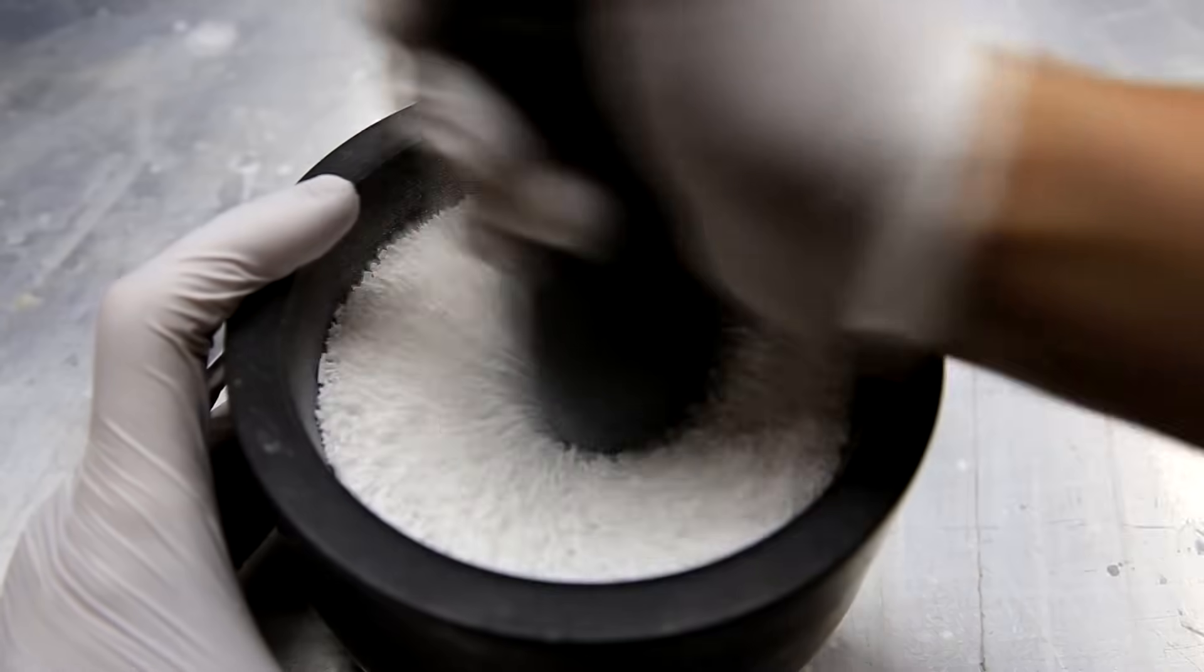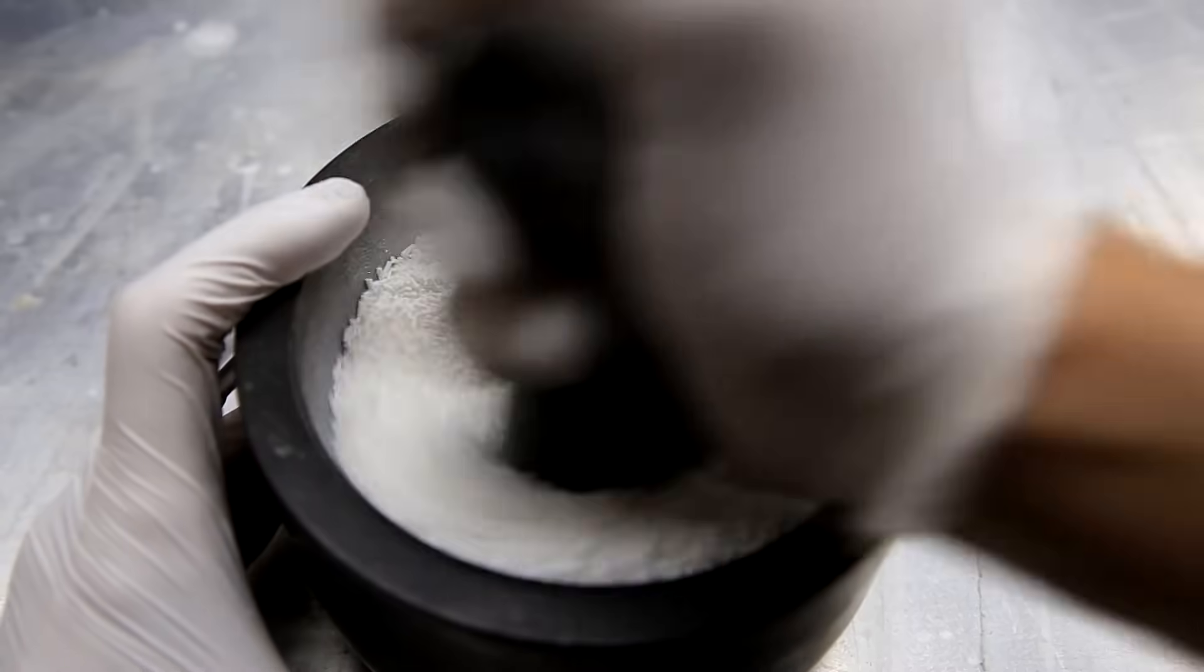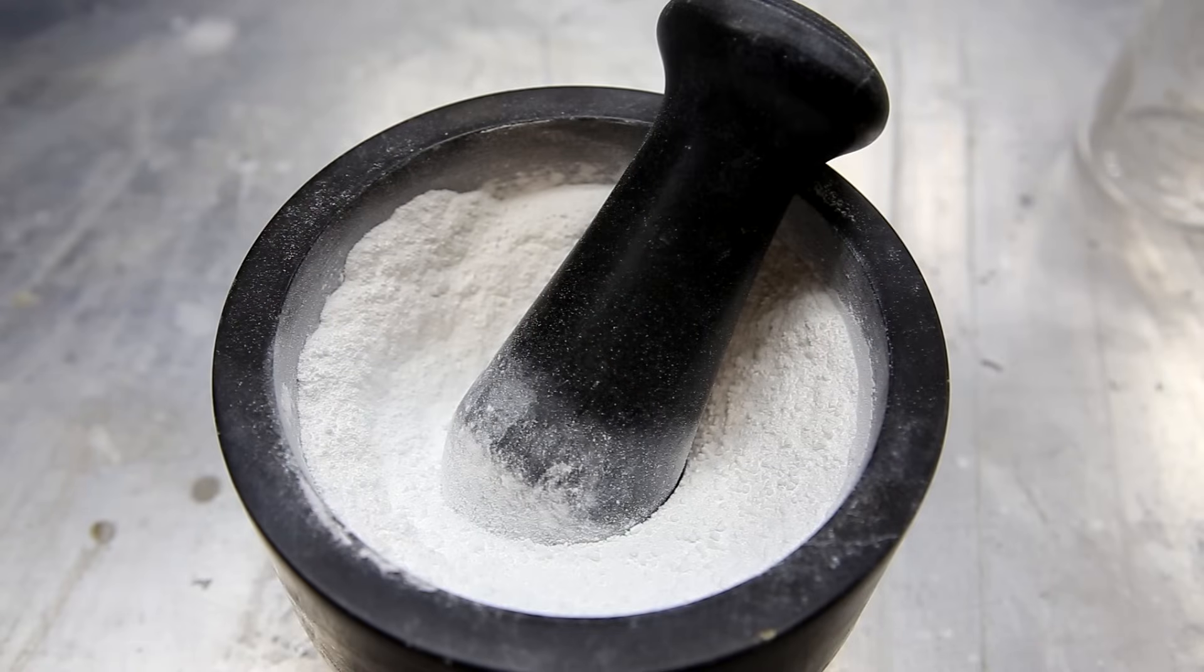Alternatively a coffee grinder could have been used instead of doing it by hand, and the easiest method is to simply buy sodium benzoate in powder form. After enough grinding eventually we're left with the powder.